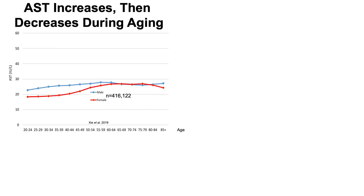Let's have a look at the aging data. AST is on the y-axis plotted against age, starting from 20-year-olds all the way up to 85 plus. When looking at males in blue and females in red, we can see that values somewhere around 20 are found in young adults. AST then increases for both men and women up to about 60 years old and then is approximately flat, staying somewhere closer to 30 up until about 85 years of age.